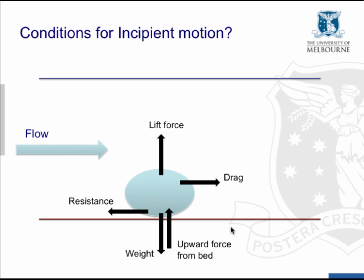So we have five forces acting on the particle to think about. We have the weight force acting downwards, we have a force upwards from the bed, we have a drag force to the right produced by flow passing around the particle. As flow accelerates over the top of the particle we get a reduction in pressure according to Bernoulli's principle and that produces a lift force, and finally there's a resistance force applied from the bed on the particle in the upstream direction that resists the drag force.